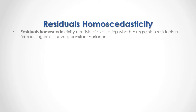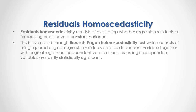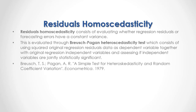Residuals homoscedasticity consists of evaluating whether regression residuals or forecasting errors have a constant variance. This is evaluated through the Breusch-Pagan heteroscedasticity test, which consists of using squared original regression residuals' data as dependent variable together with original regression independent variables and assessing if independent variables are jointly statistically significant. For full reference, I recommend that you read Breusch-Pagan, a simple test for heteroscedasticity and random coefficient variation, published in Econometrica in 1979.